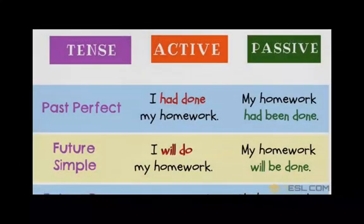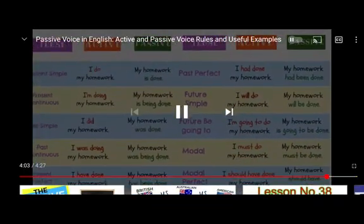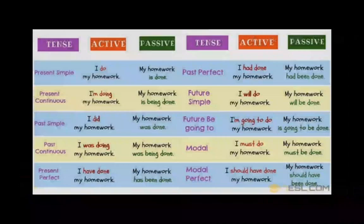So here are some key points. First, you change the first form of the verb into the past participle. Second, you put 'been' between the helping verb and the past participle — for example, present perfect: 'I have done my homework' becomes 'My homework has been done'; past perfect: 'I had done my homework' becomes 'My homework had been done.'